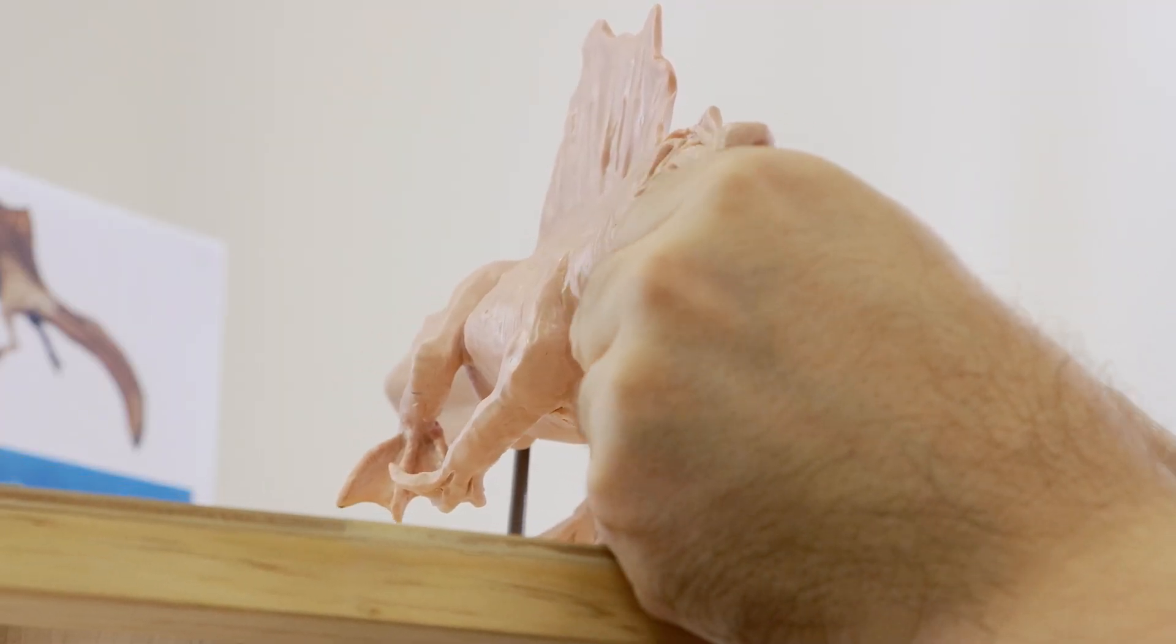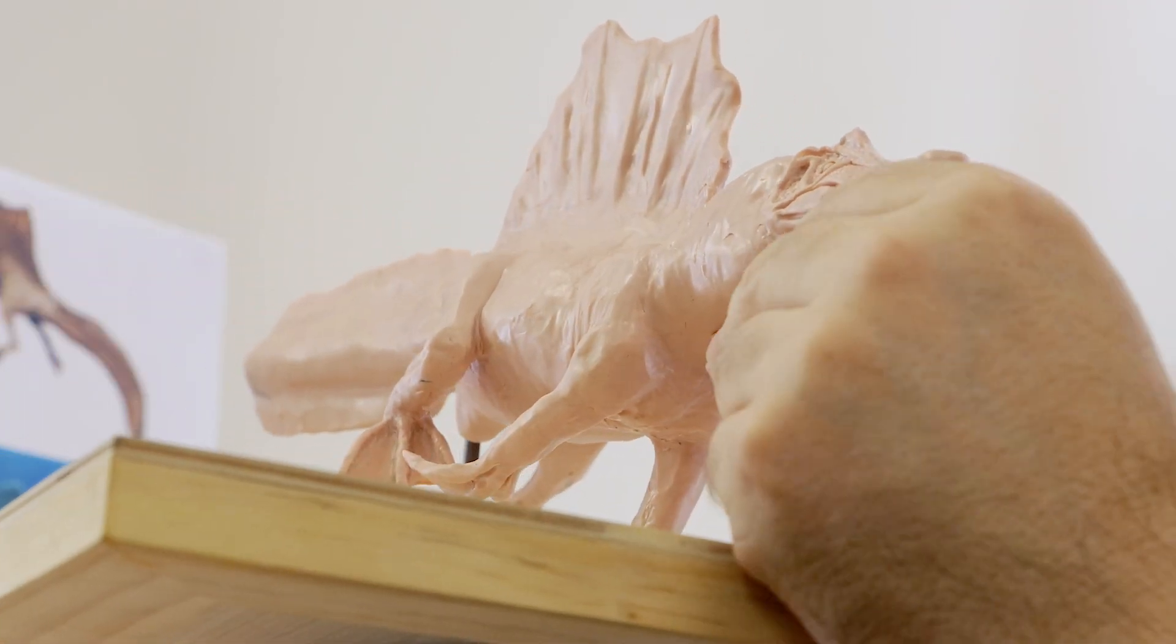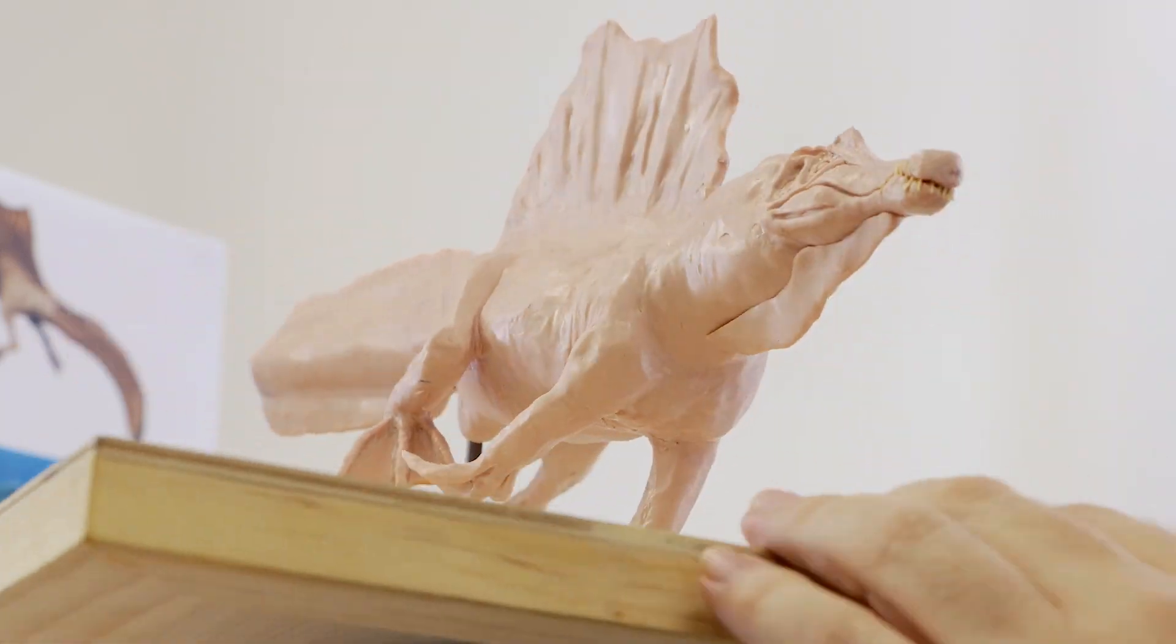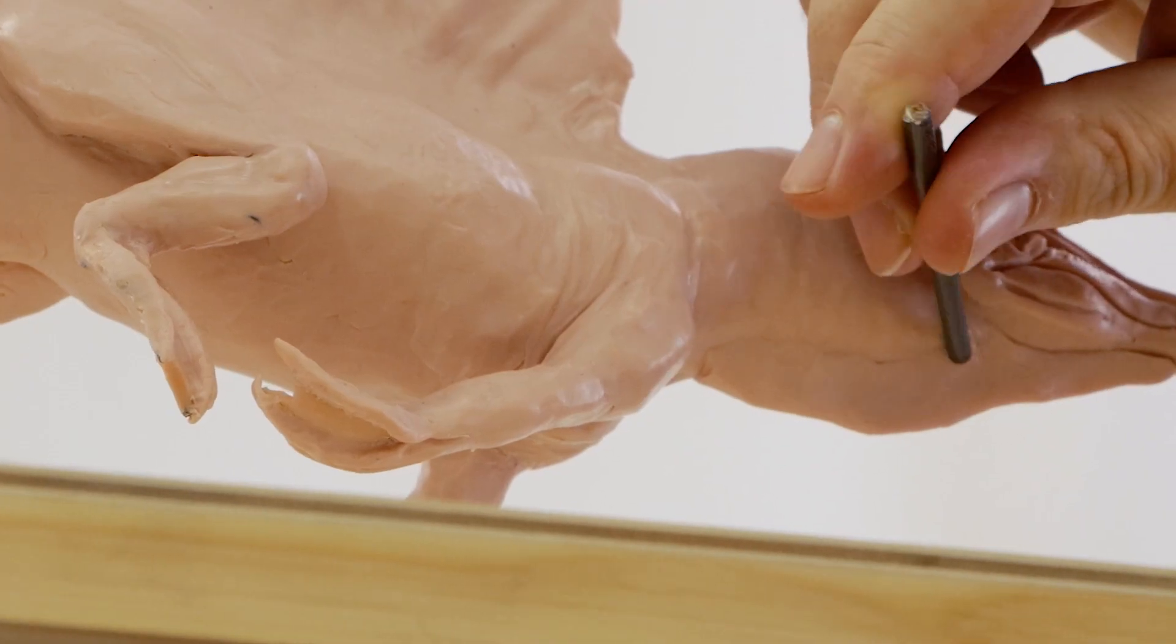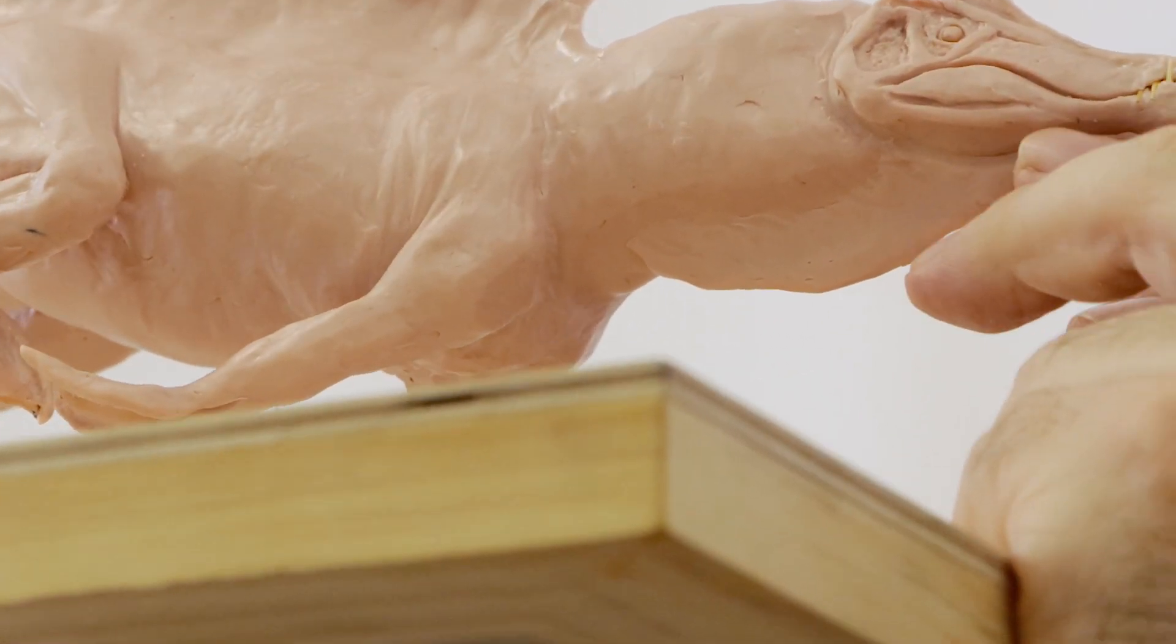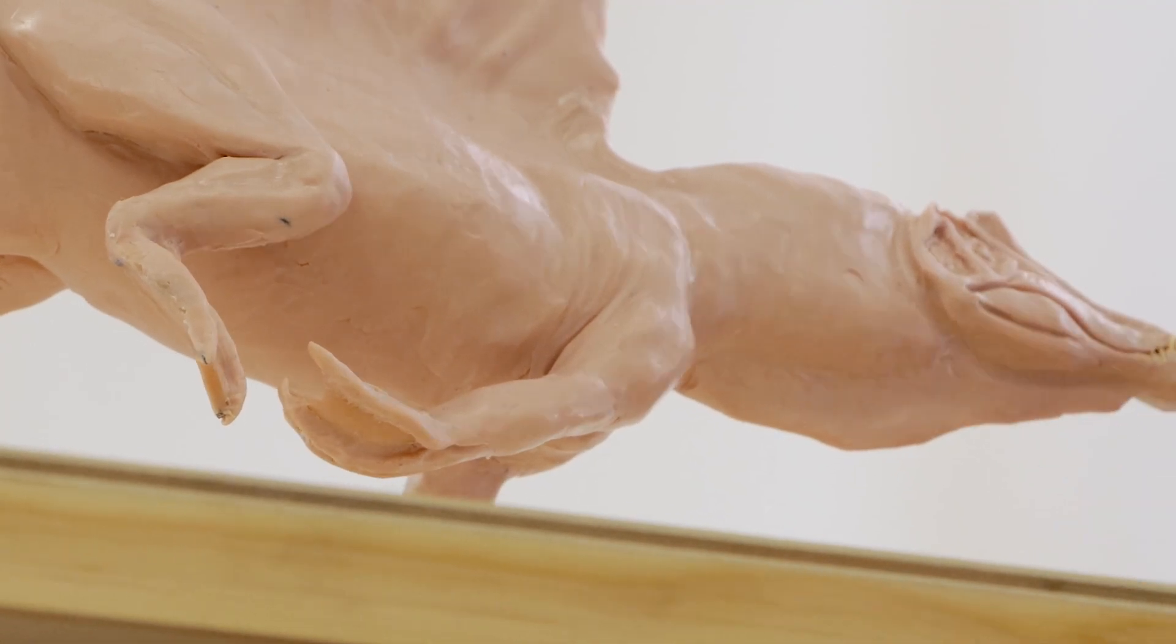To give an idea on just how big Spinosaurus actually was, T-Rex is estimated to have been 39 to 42 feet long. And estimates put Spinosaurus at approximately 60 feet long. In fact, they were thought to have been the largest carnivore to ever have walked the earth.